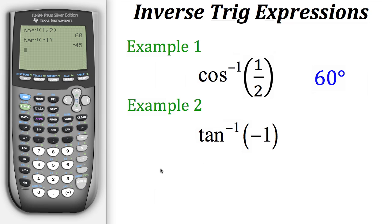And when we do that, we can see that our solution closest to the origin is negative 45 degrees. Now let's take a look at one more example.